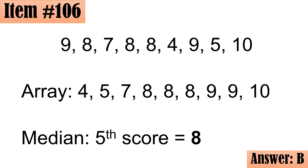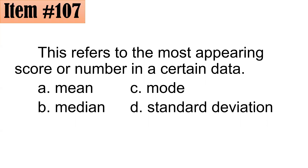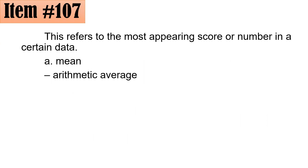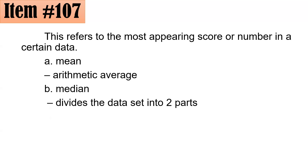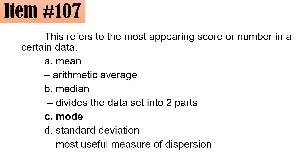Item 107: This refers to the most appearing score or number in a certain data set. Mean is the arithmetic average; median divides the data into two parts; the mode is the score with the highest frequency; standard deviation is the most useful measure of dispersion. The answer is mode, letter C.